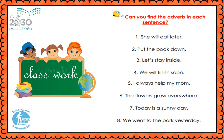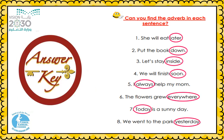Number seven: 'Today is a sunny day.' When is it a sunny day? Today. The adverb is 'today' — circle it. Number eight: 'We went to the park yesterday.' When did we go to the park? Yesterday. Yesterday is the adverb — good job grade one! Check your answers please. Here's the answer key for the page.